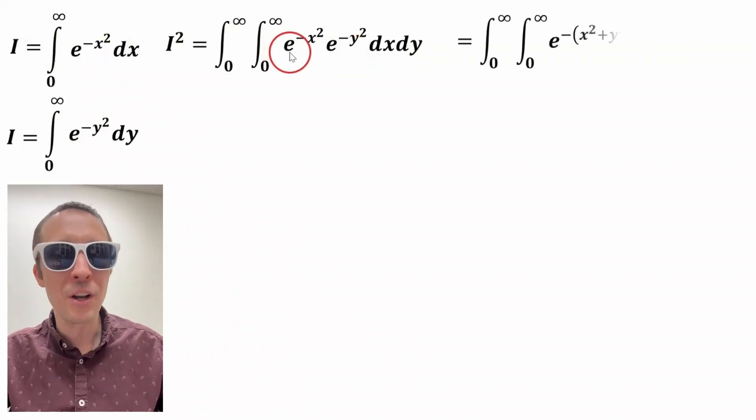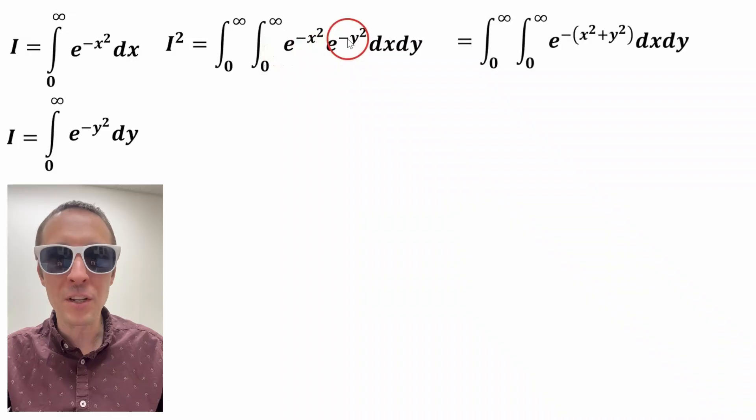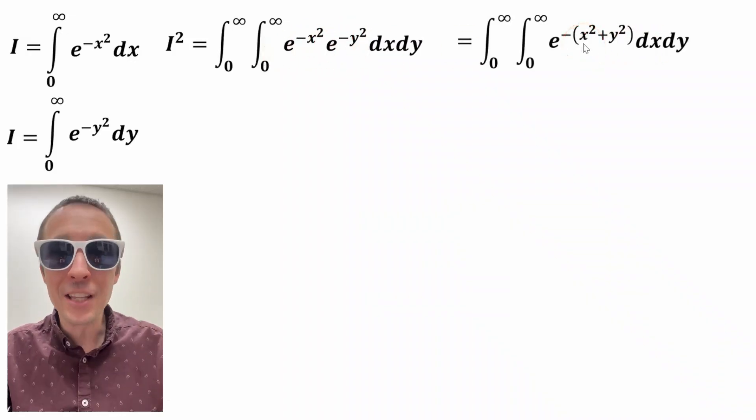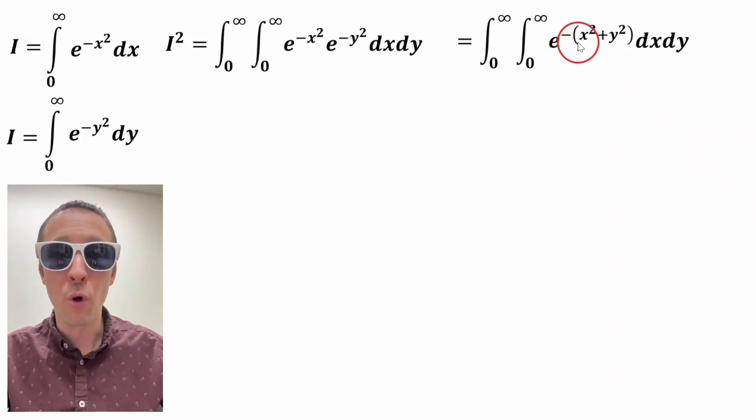Now we're going to invoke an exponent law where we can add the exponents because we're multiplying the bases together. So that's what we're doing. And at this point, we're going to convert into polar coordinates.